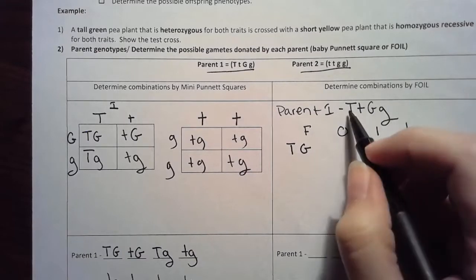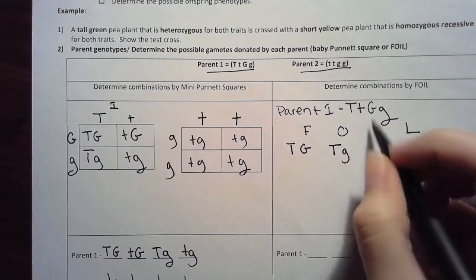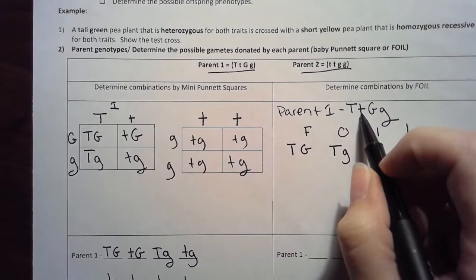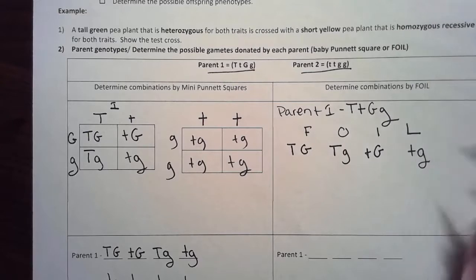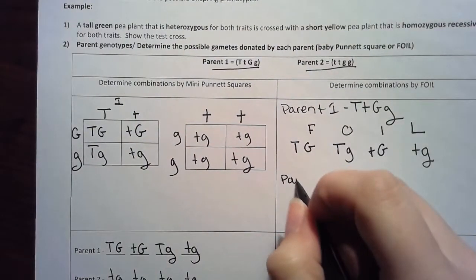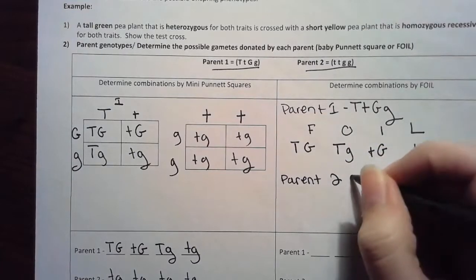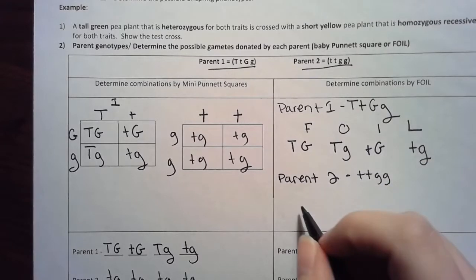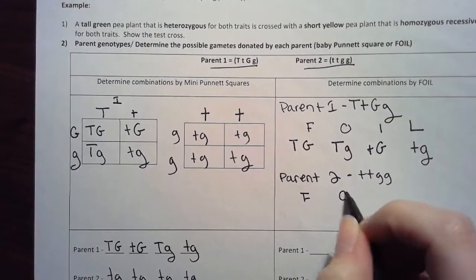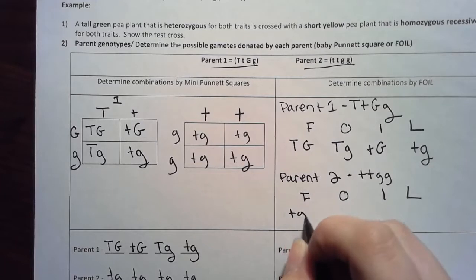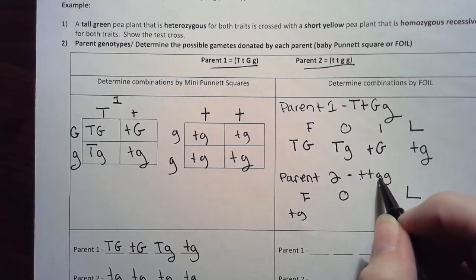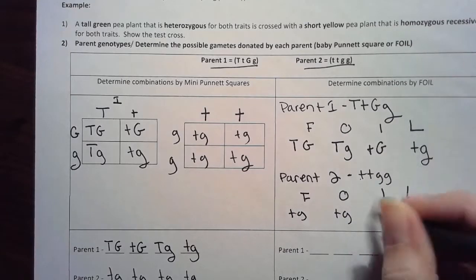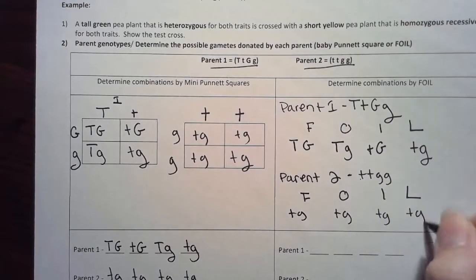Outside, those are my two outside letters, that's T capital T and lowercase g. My inside is lowercase g and big G. And my last is little t and little g. Parent two is little t little g or homozygous recessive all across. If I FOIL it, I'm going to use the same exact method: first, outside, inside, last.